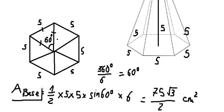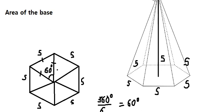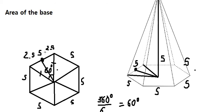Now we need to find the area of the lateral sides. If we look carefully from one vertex to the center, we can draw a line. We see that we have 5 on each side, and the center to the midpoint of a side is the apothem. So we split the base of a triangle: 5 divided by 2 gives us 2.5 on each half.